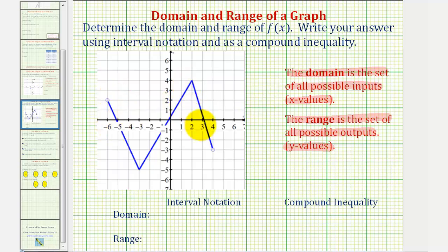If you were to project this graph onto the x axis or think how far left and how far right the graph goes, notice how it starts at negative six, but because of the open point, it does not include negative six. But then from there, it goes from negative six all the way to positive four.